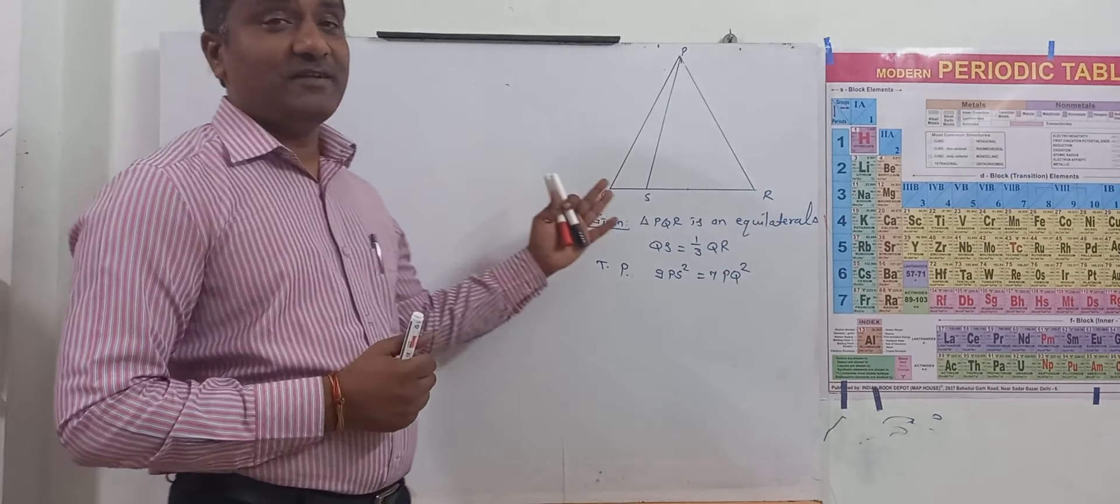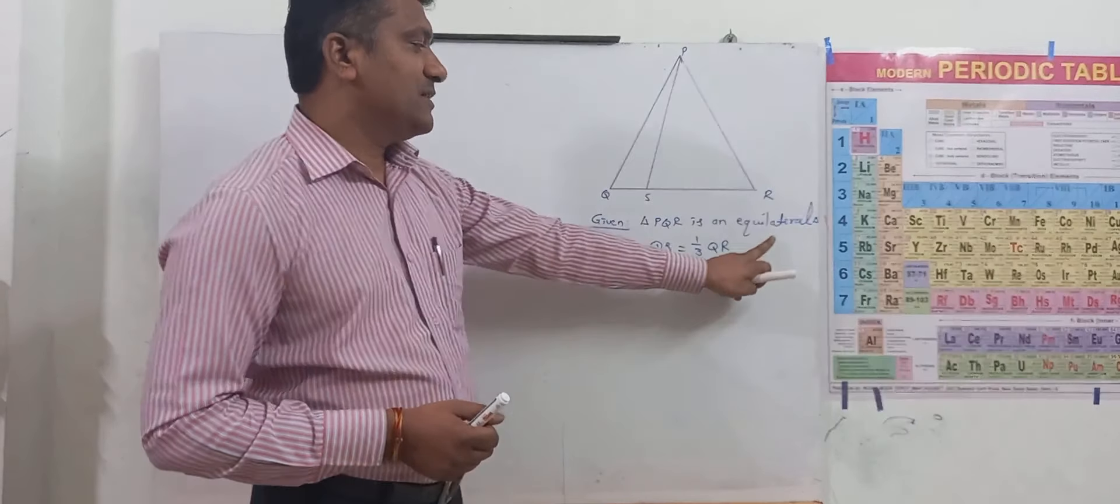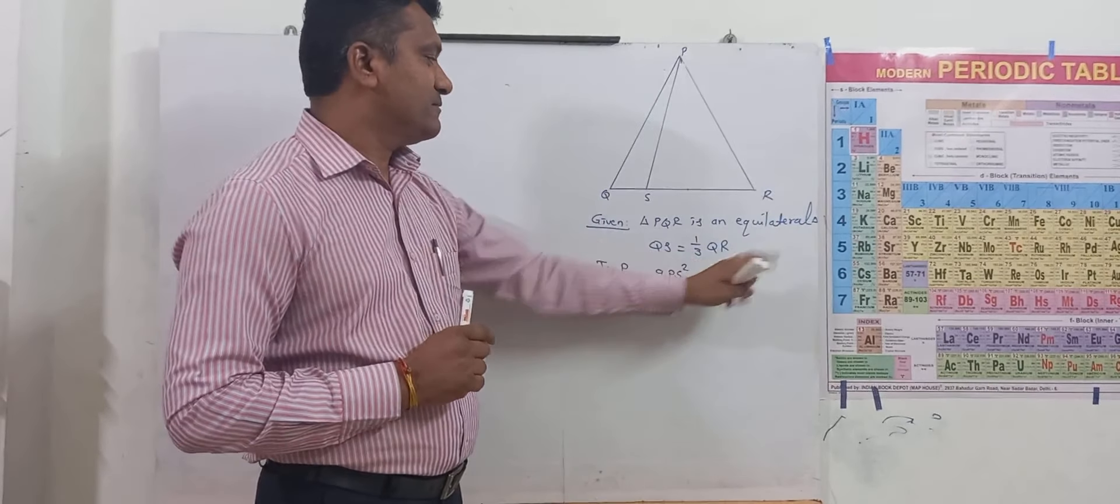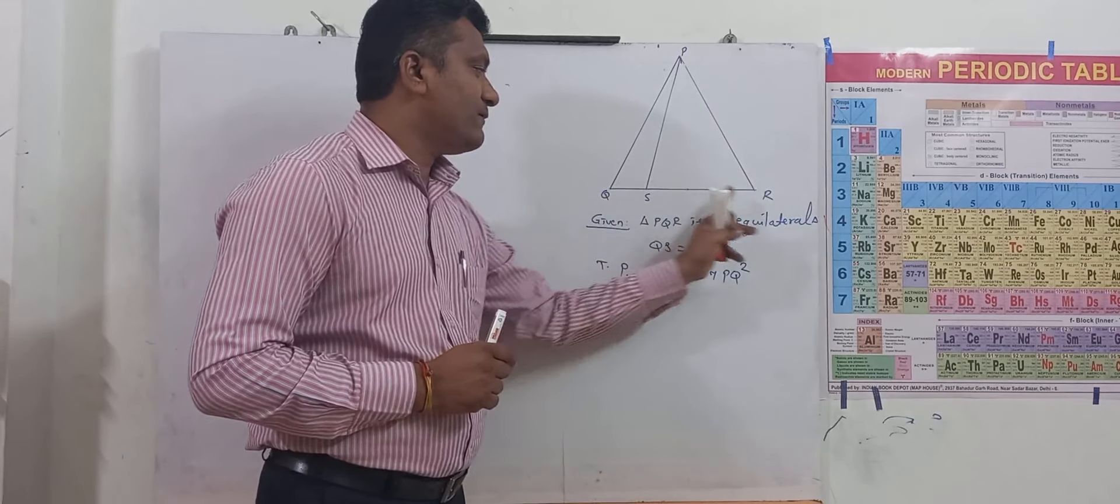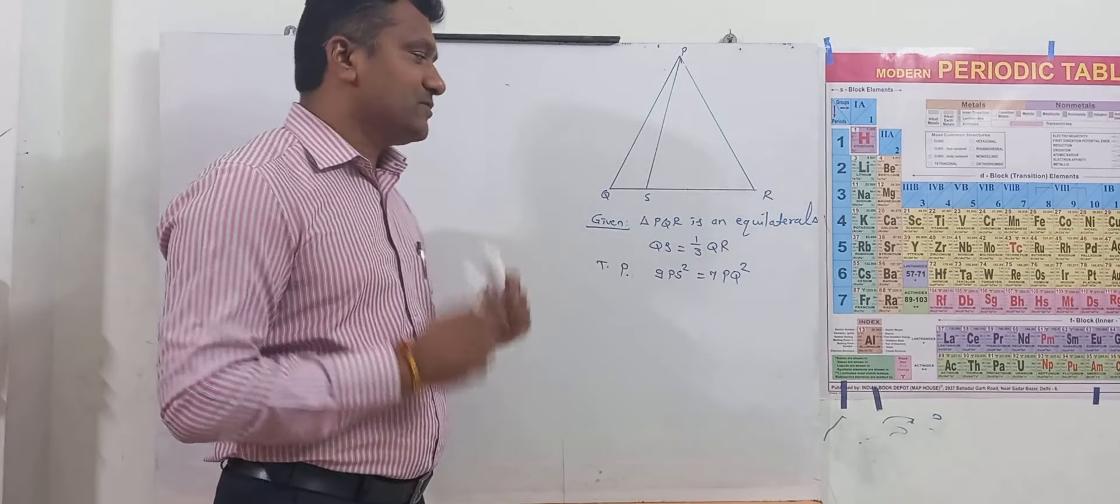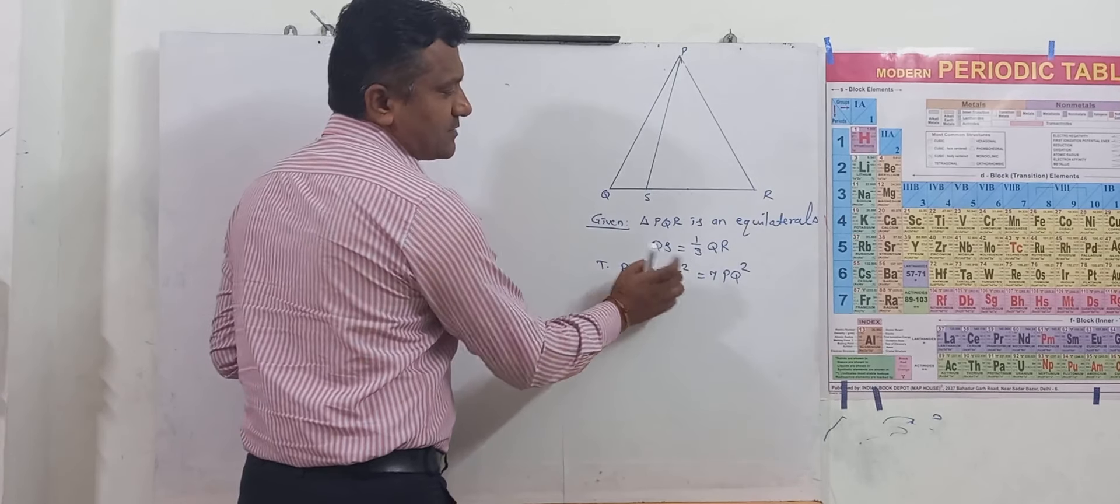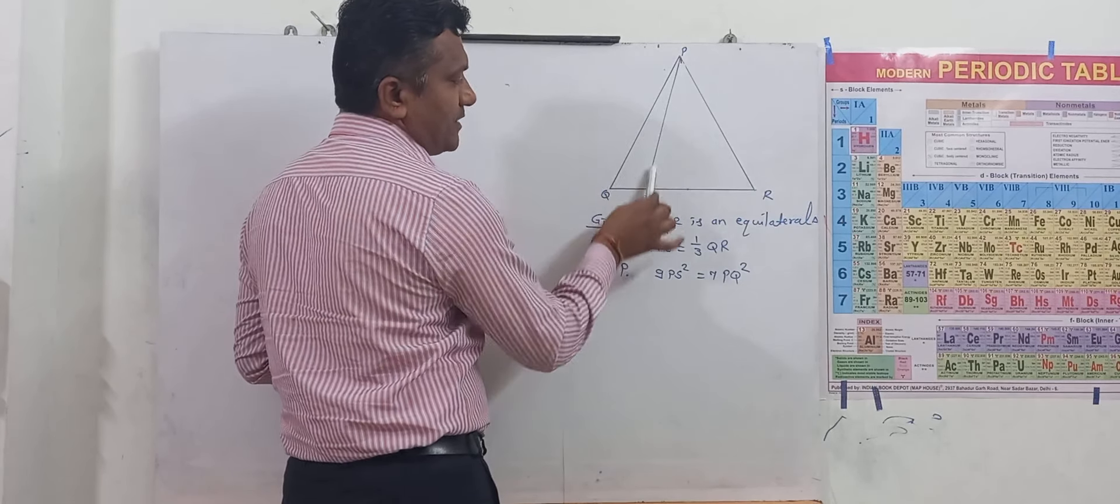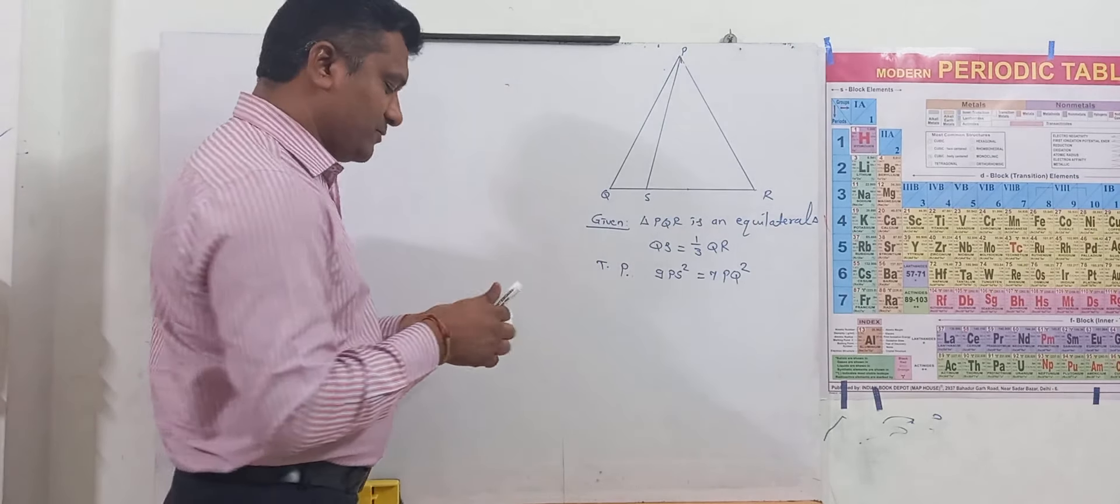Okay children, another important sum. Look at here, triangle PQR is given, an equilateral triangle. Second given information is QS is 1 by 3 of QR. These two informations are provided to you and you have to prove that 9PS square equal to 7PQ square. So this is to prove.